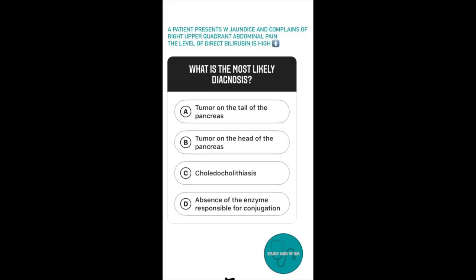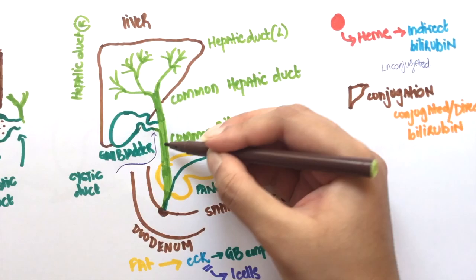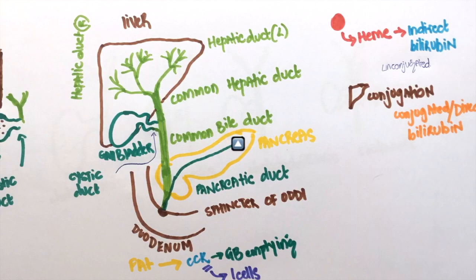Our patient has high levels of direct bilirubin. This means that the conjugation has already taken place. So, we can eliminate the fourth option here. Direct bilirubin levels are usually high whenever there's an obstruction. This is because the direct bilirubin builds up and leaks into the blood. A tumor on the tail of the pancreas will not cause obstruction to the flow of bile. So, jaundice is very unlikely.